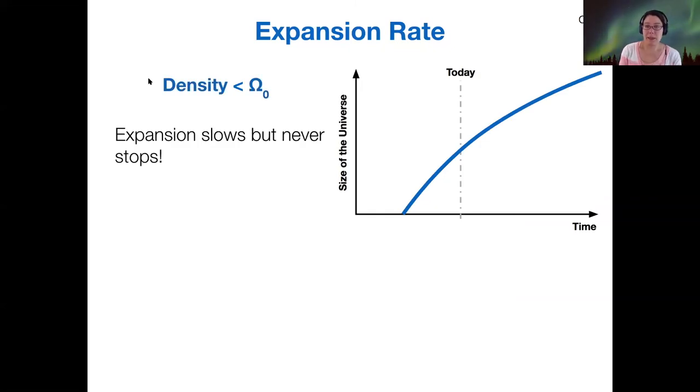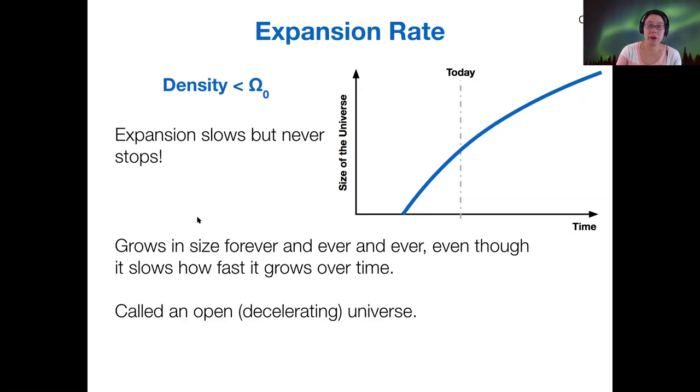Okay. Let's consider what happens when we have less than the critical density. So in this case, the expansion slows over time, but it never comes to a stop, not even at infinite time. So it just continues to expand slower and slower forever and ever and ever.